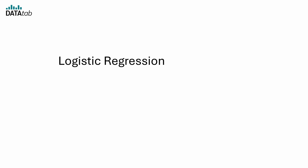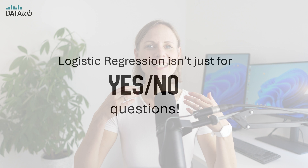Remember, logistic regression isn't just for yes-no questions — it's also used when you're dealing with categories, like predicting whether someone will vote for candidate A, B or C. If you just have two categories, it is called binary logistic regression. It's versatile, powerful and yes, a bit dramatic. But who doesn't love a little drama in their data?